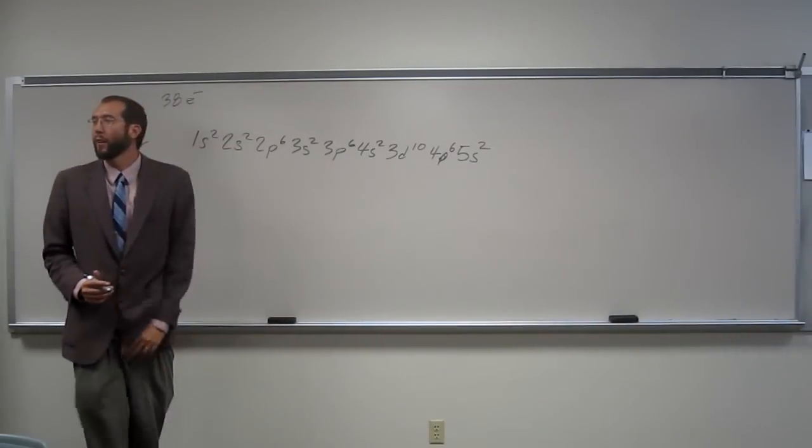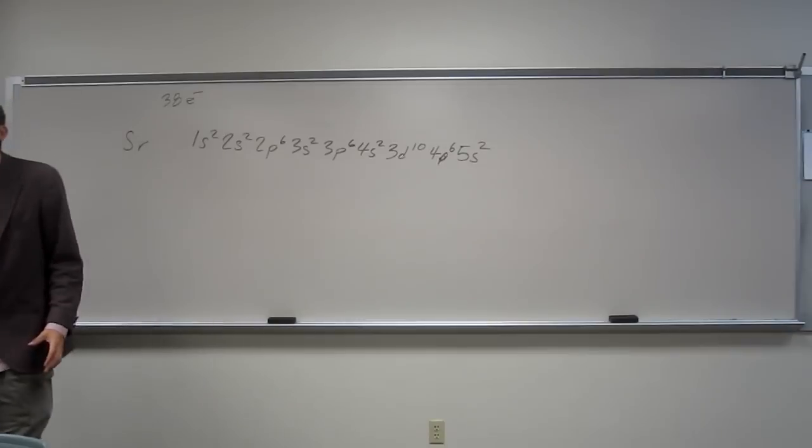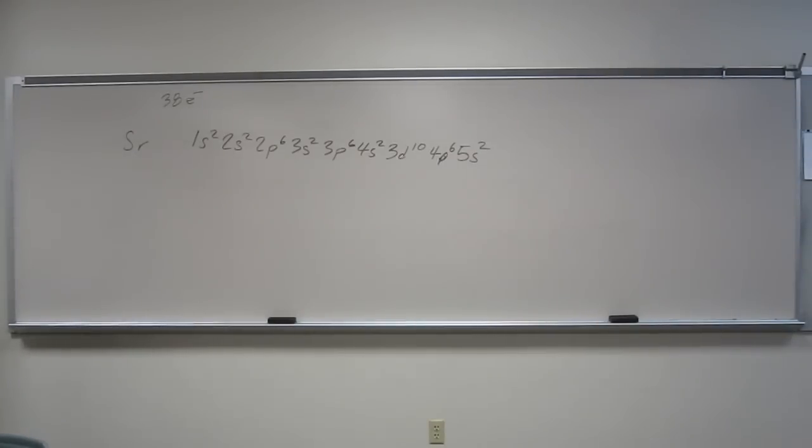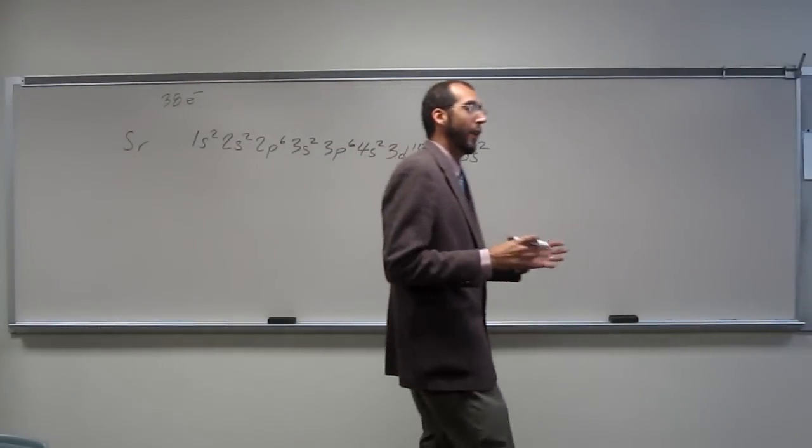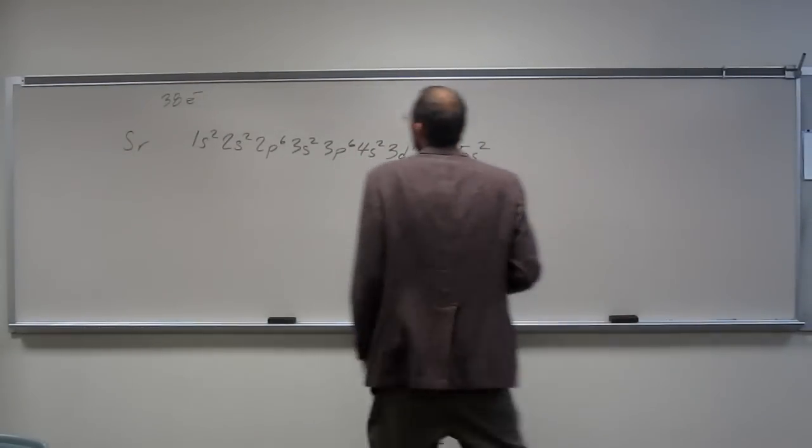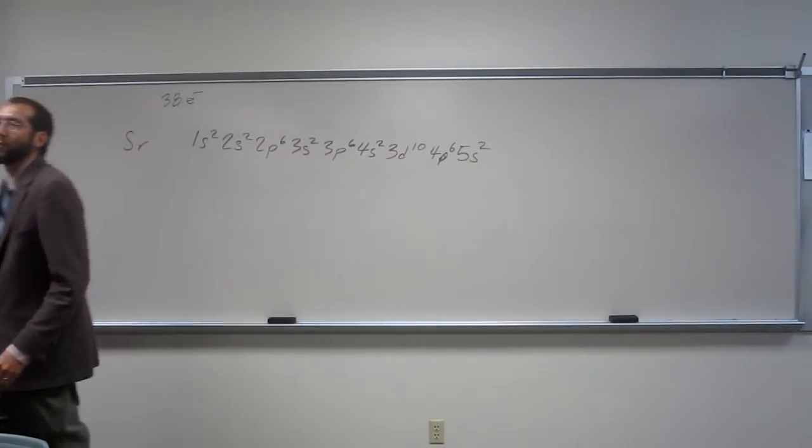Let's do the condensed electron configuration - condensed, abbreviated, noble gas electron configuration. You'll hear all of those terms, they're interchangeable. So how do we do the noble gas configuration of any element? Noble gas, and then add the what? The valence. The valence electrons. Yeah, the remainder electrons are called the valence.